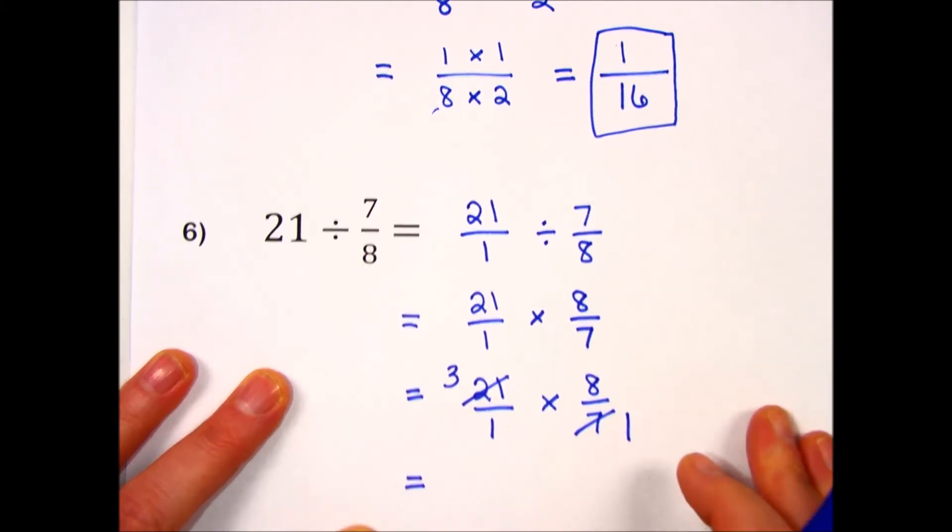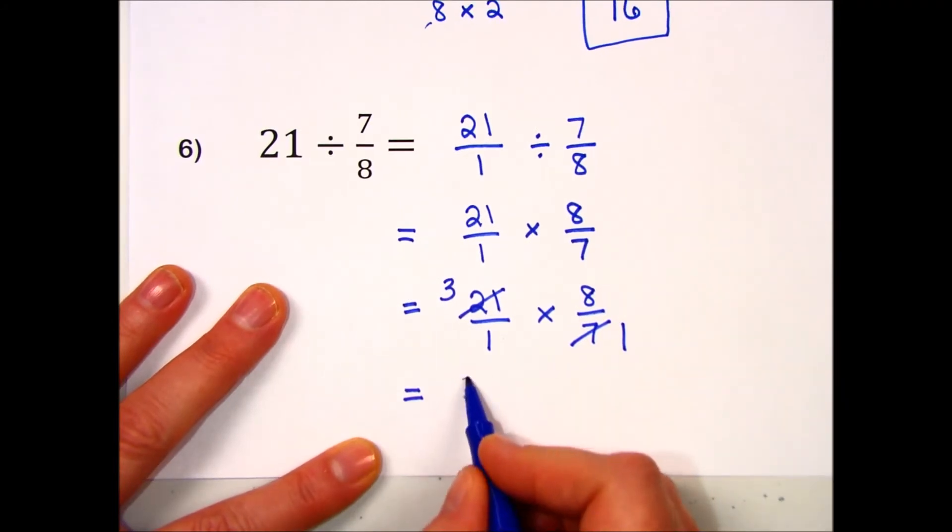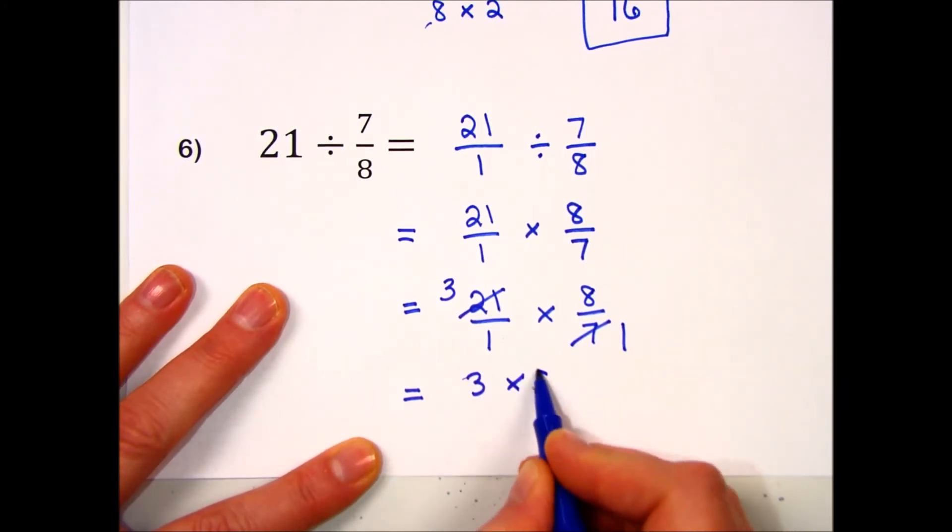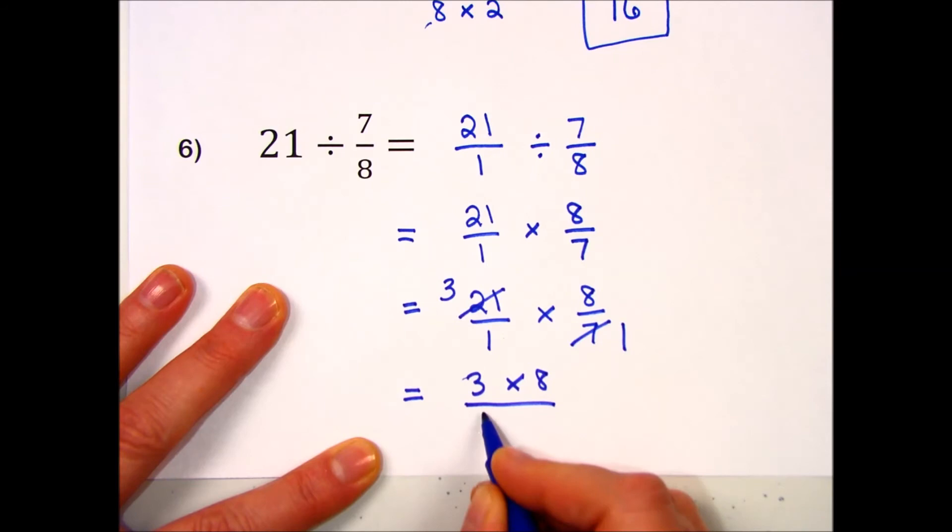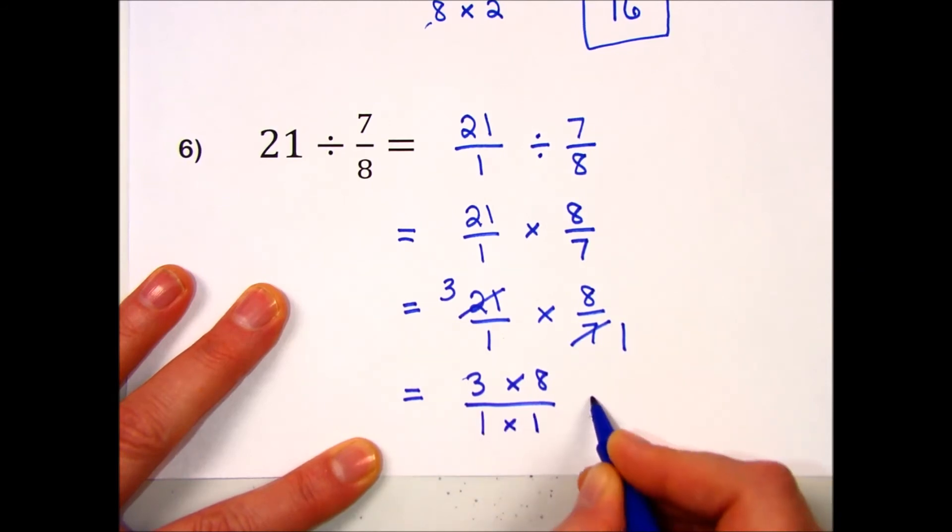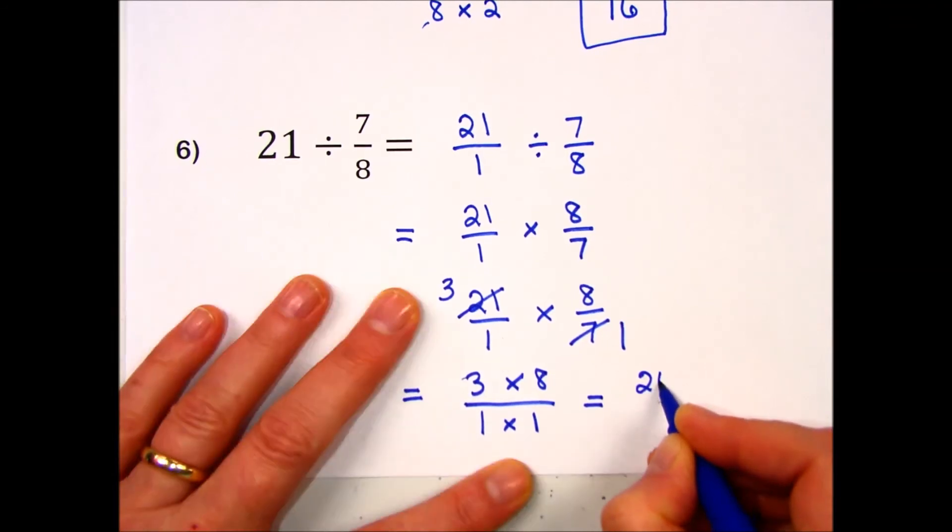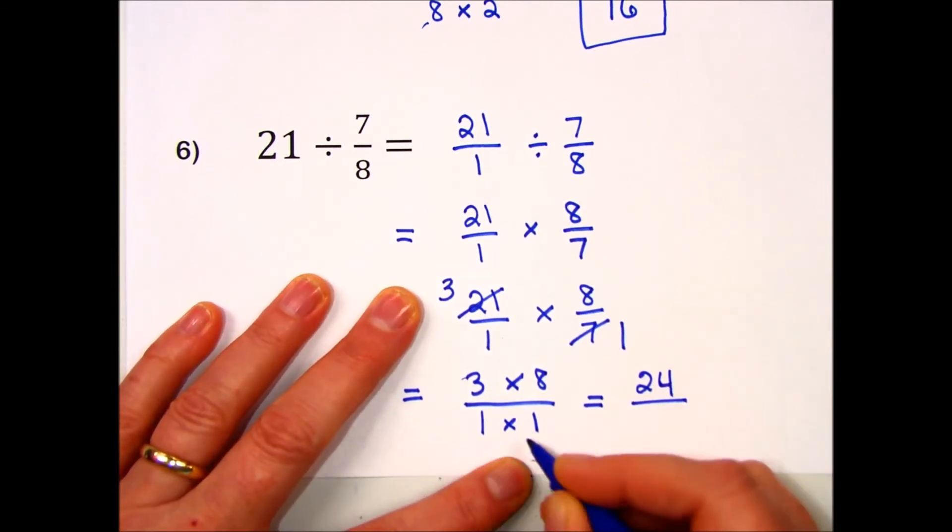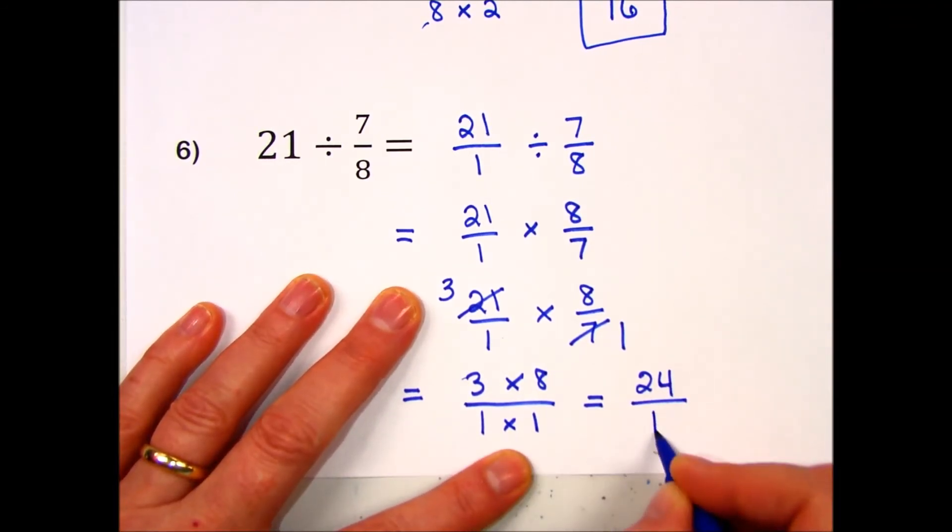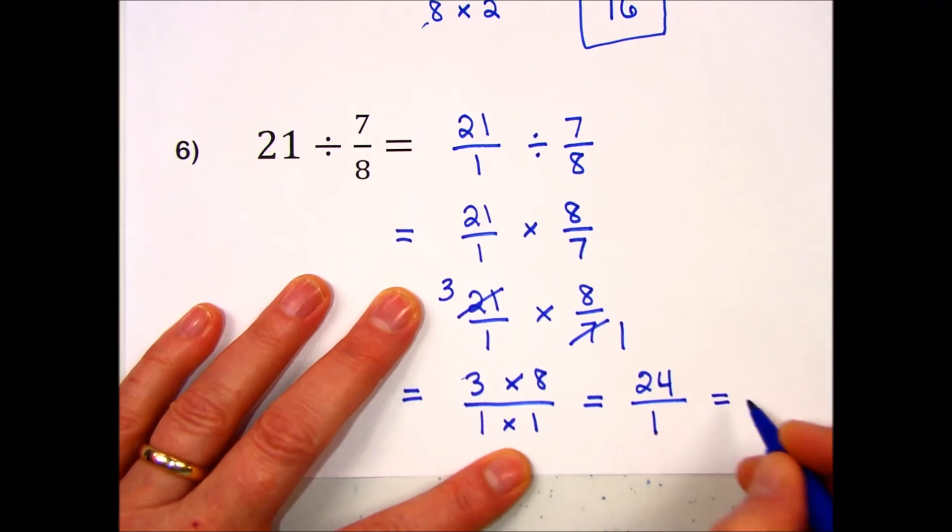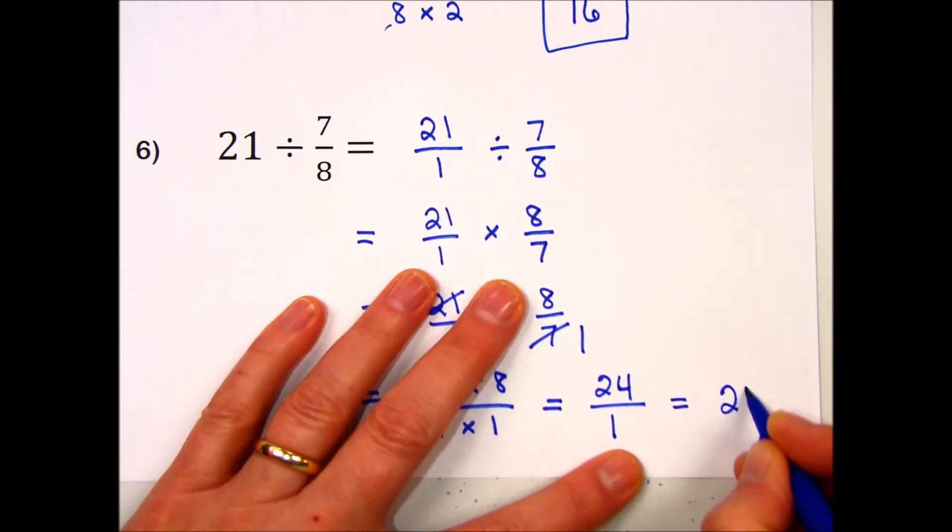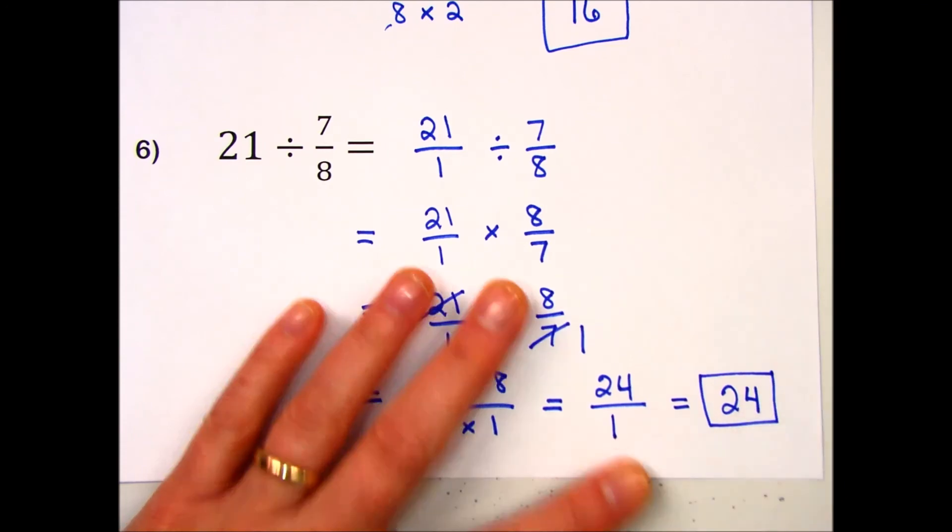Following the rules for multiplying top times top over bottom times bottom, do the multiplication: 3 times 8 is 24, 1 times 1 is 1. Any number that has a 1 in its denominator can just be written as the whole number, and our answer is 24.